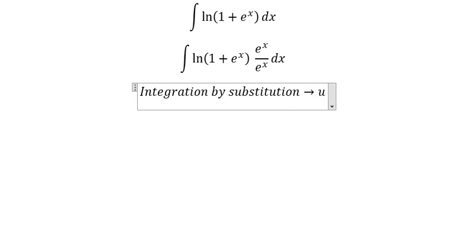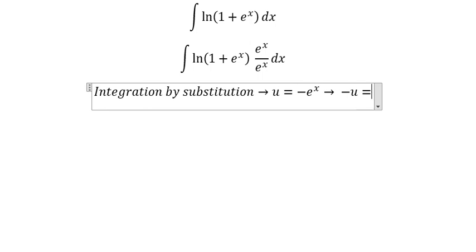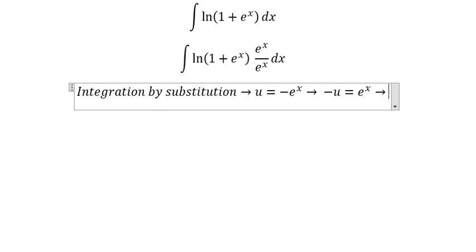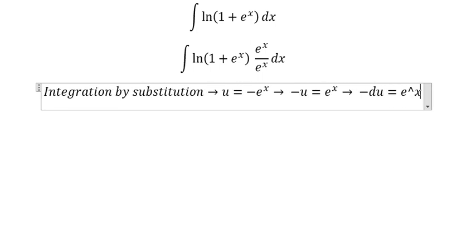So we put u equals to negative e to the power of x. So you get negative u equals to e to the power of x, and we get negative du equals to e to the power of x dx.